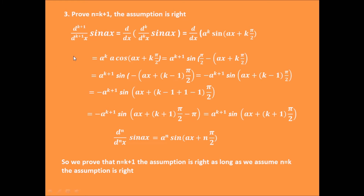Then the third step, based on the second step assumption, is to prove the statement is right when n equals k plus 1. As we know, for the (k+1)th derivative, which is the derivative of the kth order derivative function, so we have the (k+1)th derivative of sine ax equals the derivative of a to the power of k times sine of ax plus k pi divided by 2.